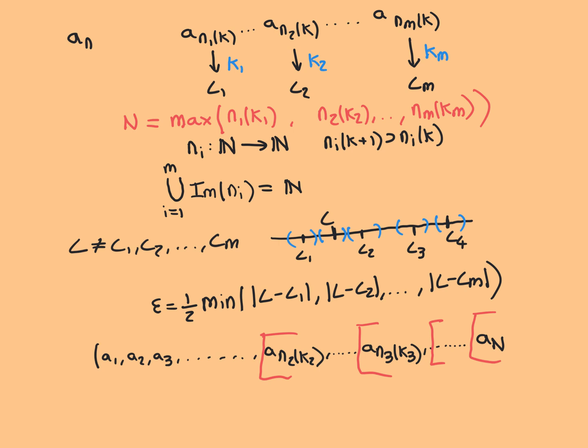Hence L cannot be a limit point. So that's the strategy for proving that if you have a bunch of subsequences that partition your overall sequence and these subsequences converge, then that collection of limits of those subsequences is your complete collection of limit points for the overall sequence. This is how you prove that nothing else can be a limit point. Thank you for watching.